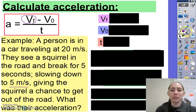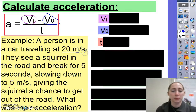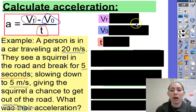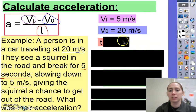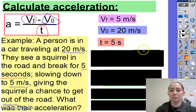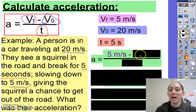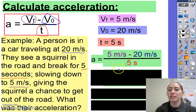Then we need the initial velocity — what they were doing originally. Originally, they were going at 20 meters per second. And lastly, we need the time, or the change over time. In this case, they gave you the time already, which is five seconds. I will often write out my variables and put in what numbers represent them. So I set up my equation: acceleration equals final velocity, five meters per second, minus initial velocity, 20 meters per second, divided by time, five seconds. It's really important you include all these units.